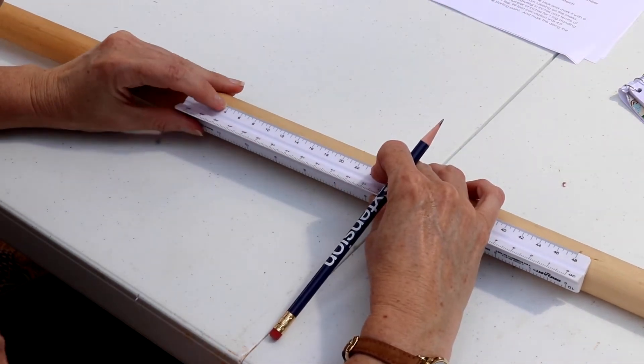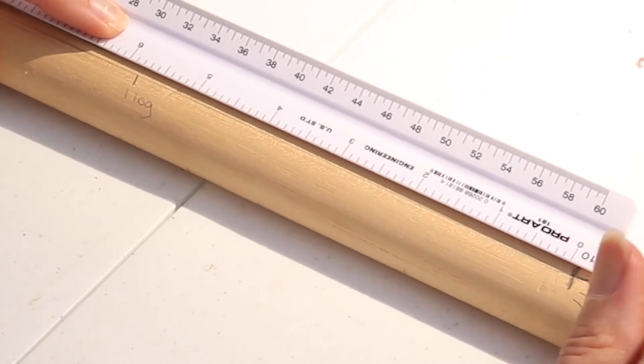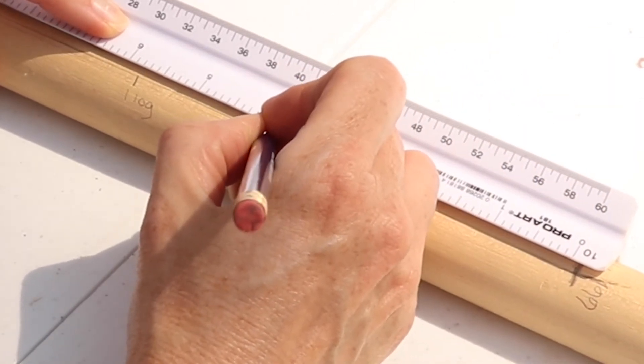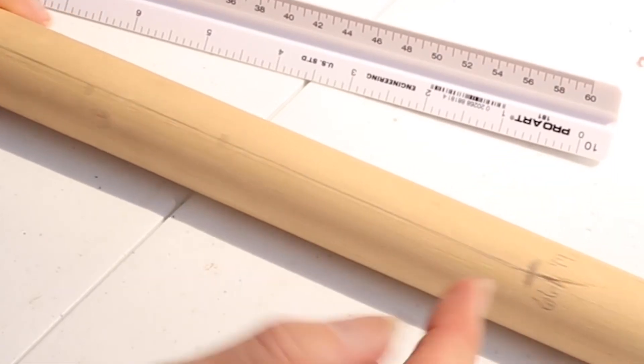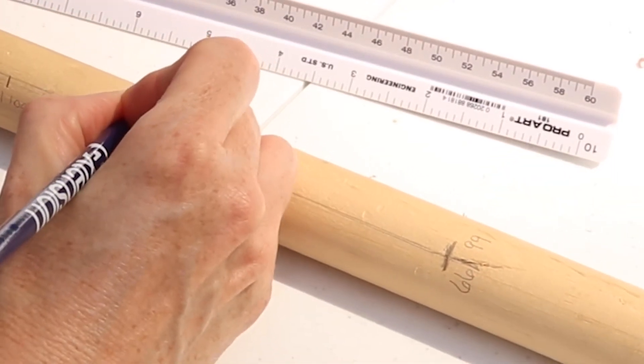For example, if your one log 99-foot calculation was four inches, you would measure four inches from the starting point and mark this along the center line. Label this as one log.